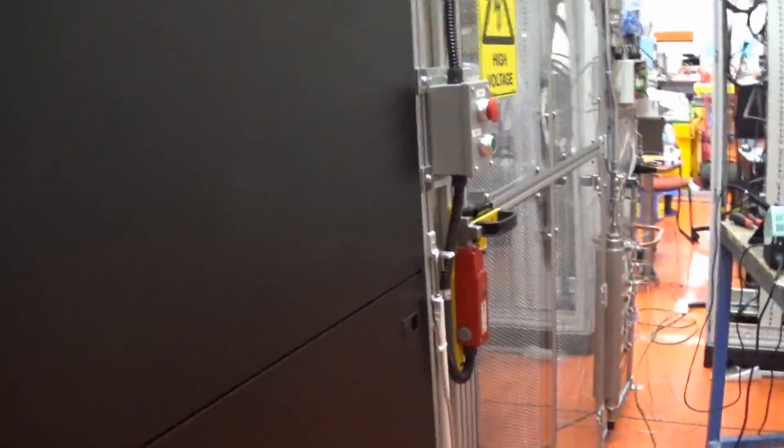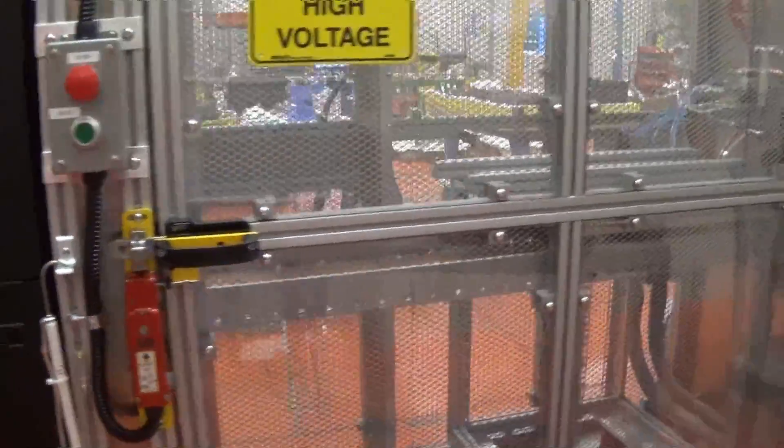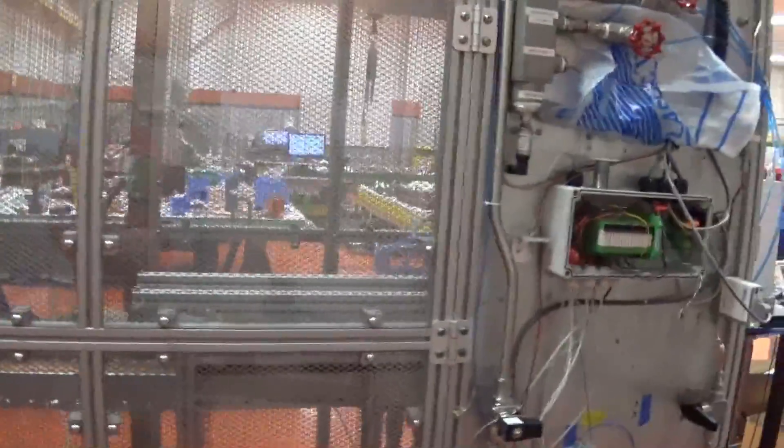This is the other side of the cage. Another interlock here. There's a door on this side.